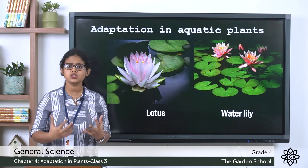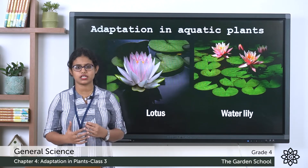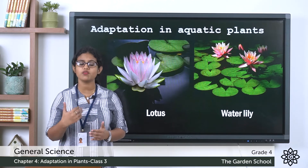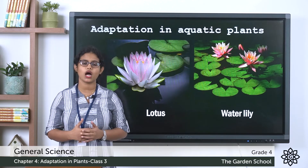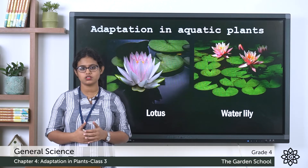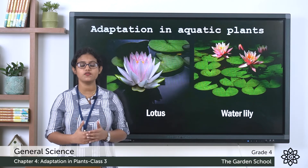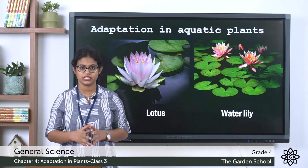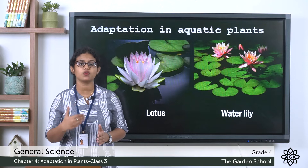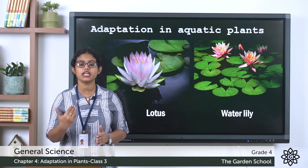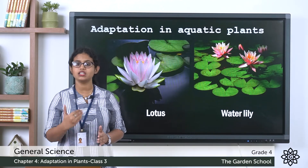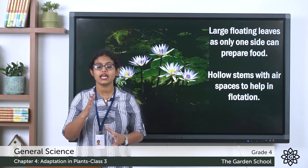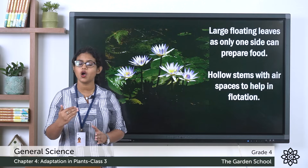Aquatic plants have special characteristics that help them grow in water. Some of these plants grow under the surface of water, while some have only their leaves growing above the water. Let's take the example of water lily to learn about adaptation in aquatic plants and see what special features help them survive in water.